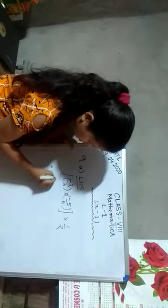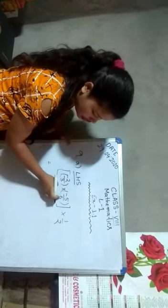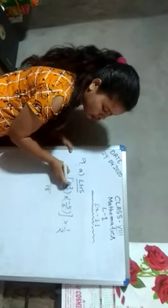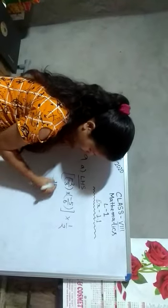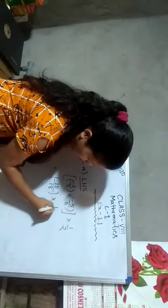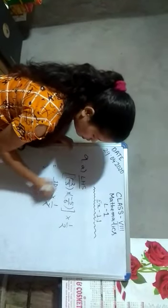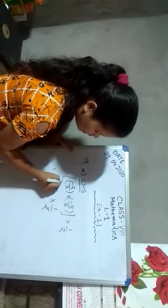Left hand side is minus 2 by 3 multiplied by minus 5 by 6, multiplied by 1 by 2. First we do 3 into 6 is 18. Minus 2 multiplied by minus 5 is 10, multiplied by 1 by 2. Here we can cut — 2 fives are 10. So the result for the left hand side is 5 divided by 18.